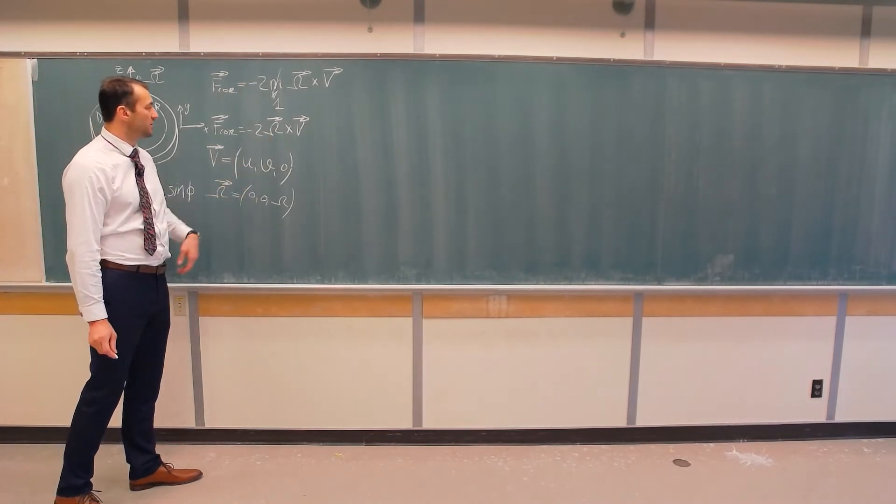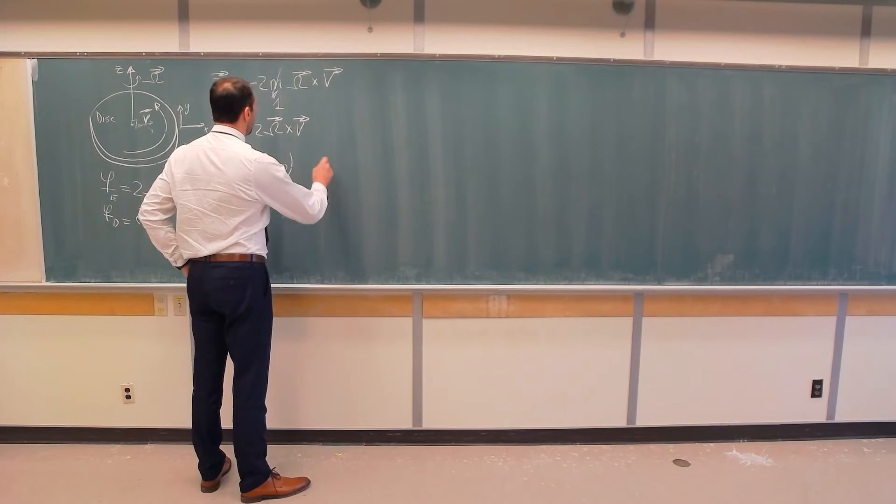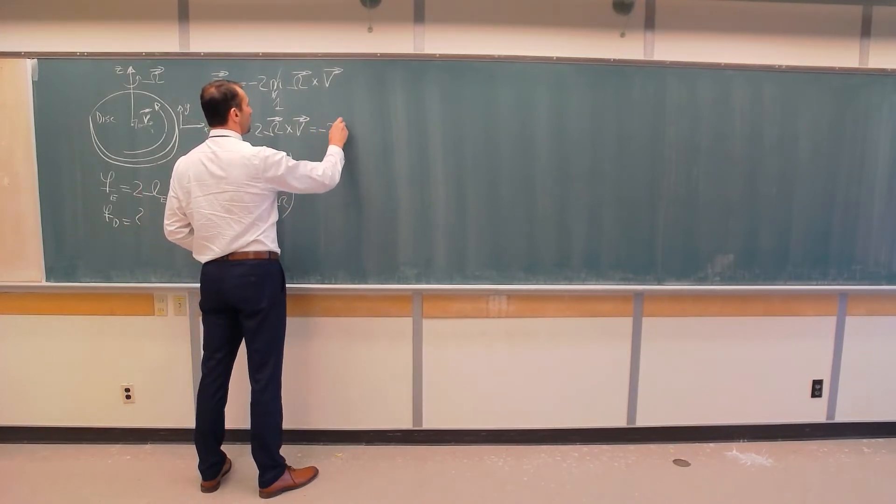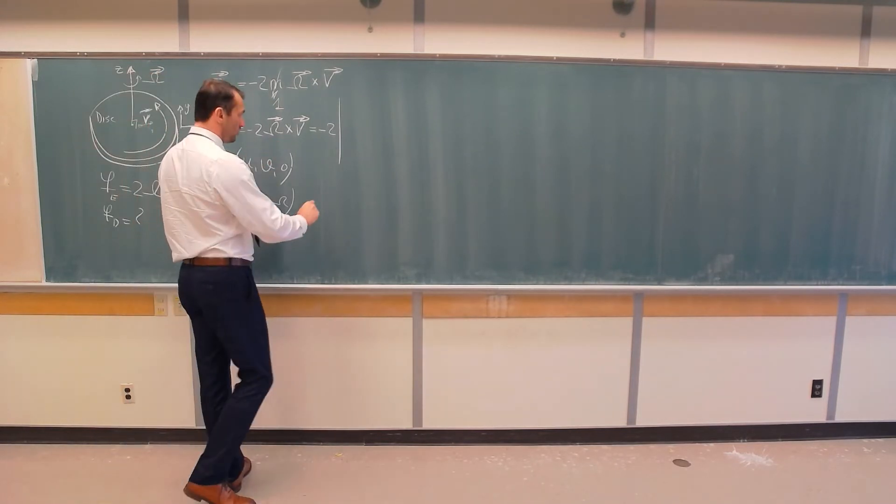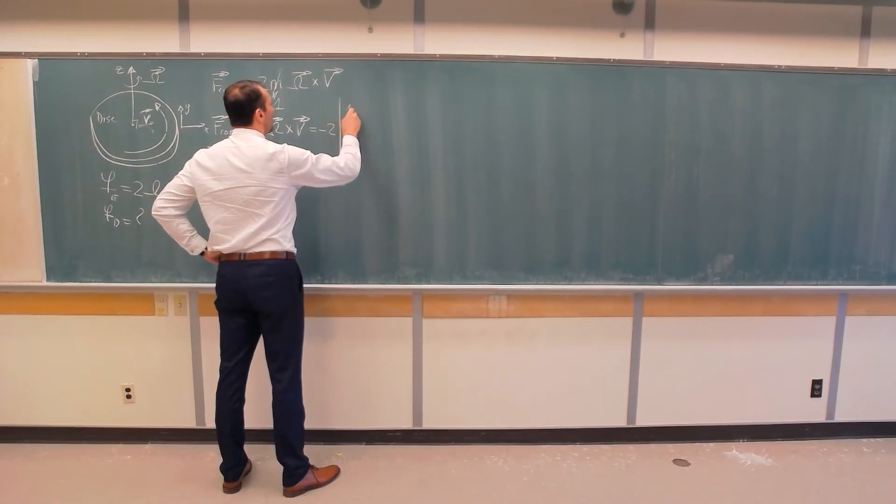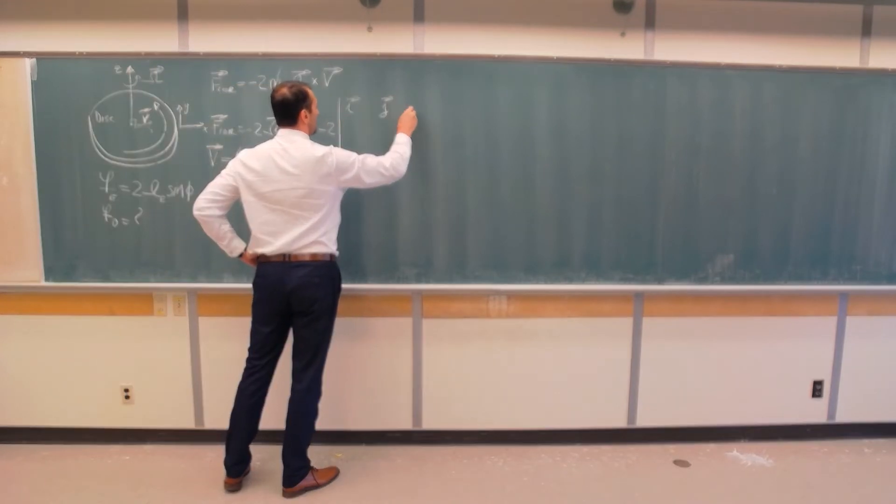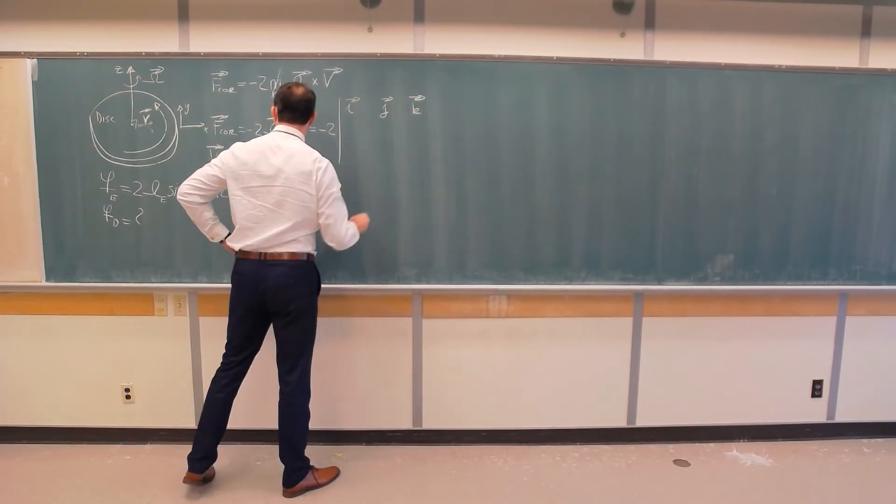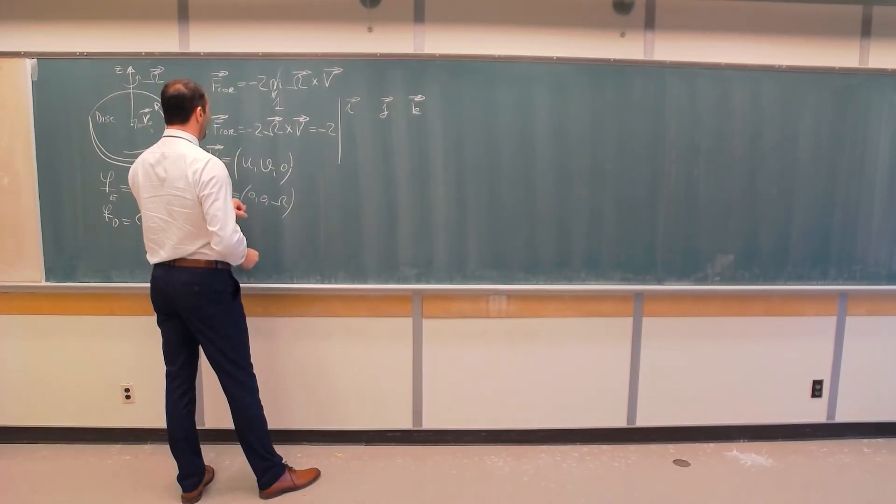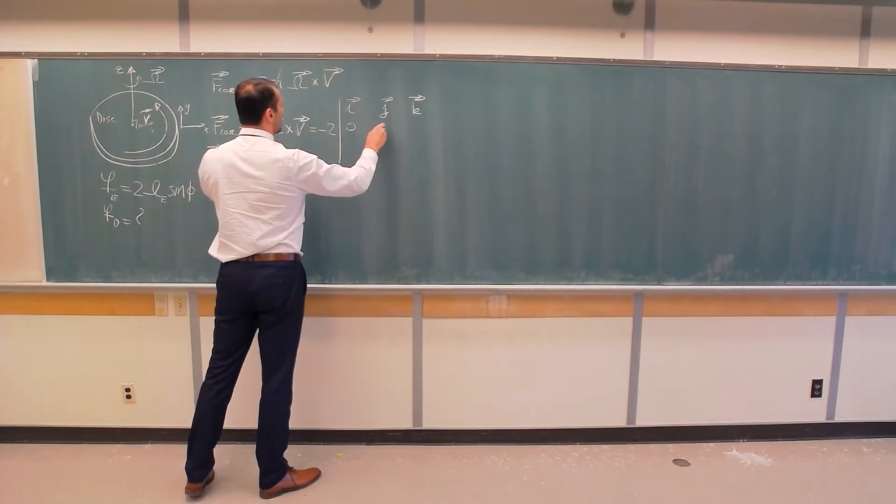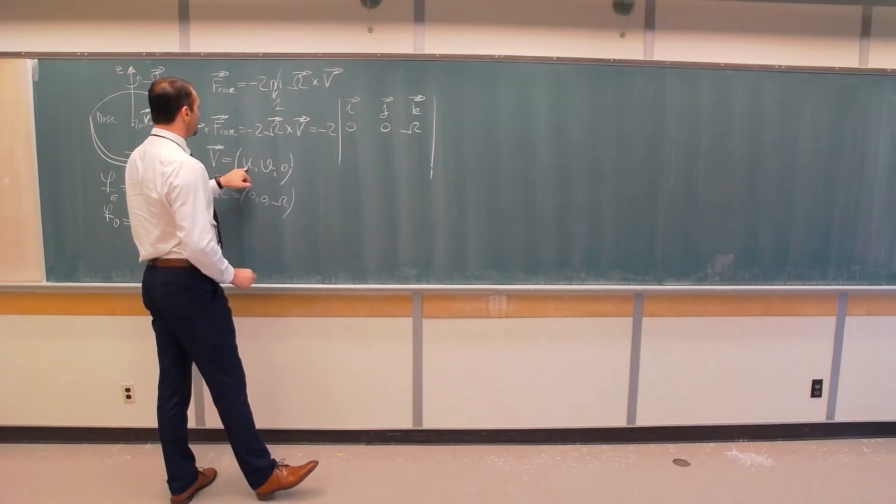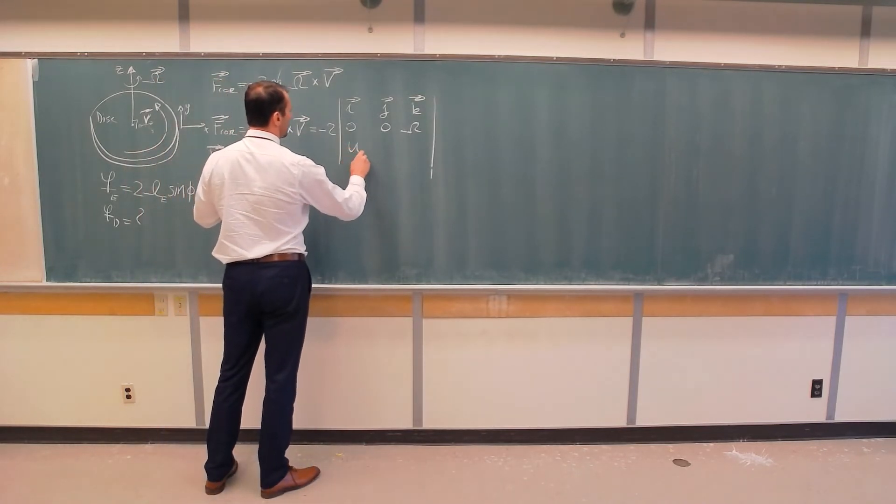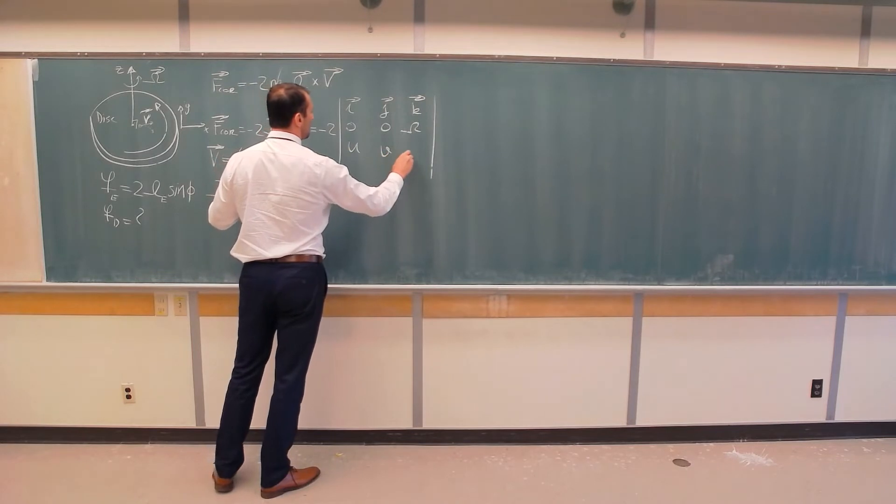Well, now we plug in these vectors in this expression, and we get that this is equal minus two, and I will use determinant to solve this cross product. So, the first row are the unit vectors, i, j, k. The second row are the components of the first vector, which is zero, zero, omega. And the third row is the second vector, which is velocity with components u, v, and zero.